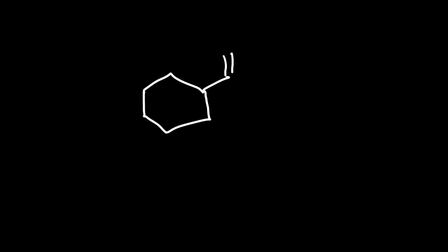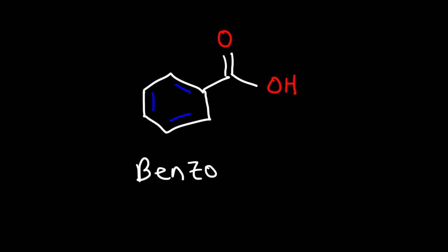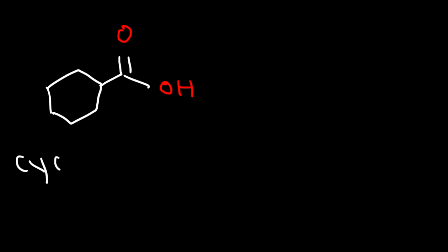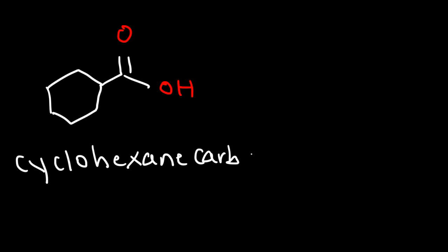Next up, we have a molecule with a benzene ring and a carboxylic acid. This is known as benzoic acid. Now what if we didn't have a benzene ring? Let's say if we have a cyclohexane ring instead with the carboxylic acid attached to it. This is called simply cyclohexane carboxylic acid.